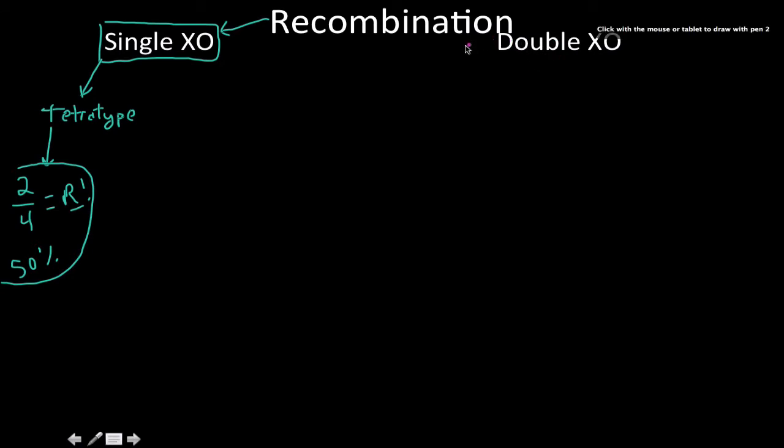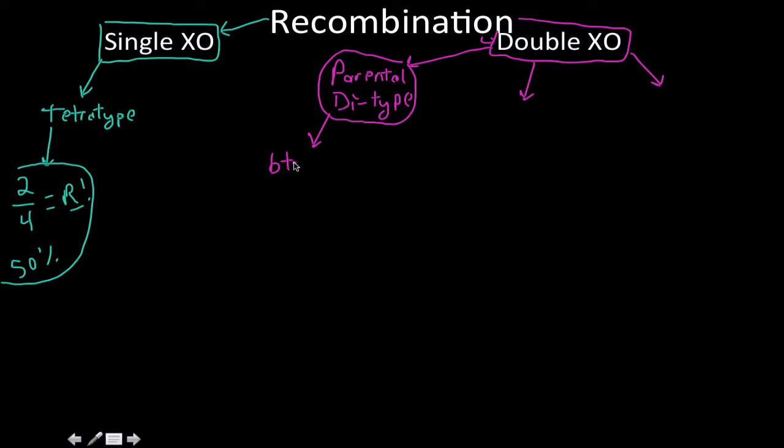Now let's talk about double crossovers. There's three distinct things we can get from a double crossover. First is parental dietype - a double crossover between the same chromosomes. If you have a double crossover, you get the parental. You wouldn't even know you had it. That's why many double crossovers go unseen.